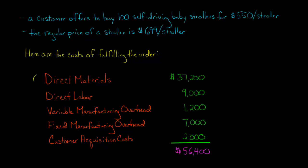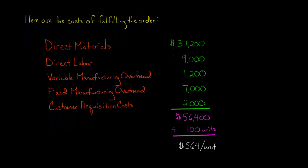And they say, there's going to be some materials involved in manufacturing these strollers. There's going to be some direct labor. We've got variable overhead, fixed overhead. And then we have some customer acquisition costs that we're going to assign to this. Let's just say that this is what the accountant says. So the accountant says, to do these 100 strollers, it would cost us $56,400. And you divide that by the number of strollers, 100, and that's $564 per stroller.